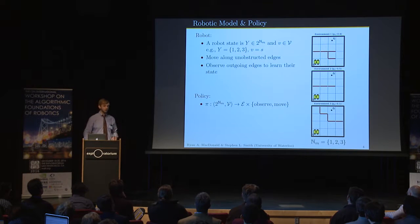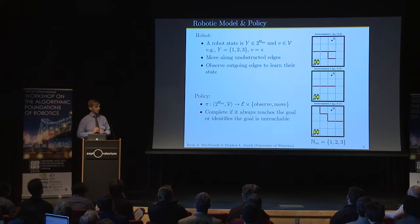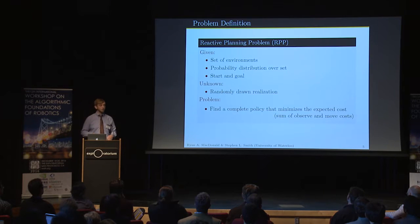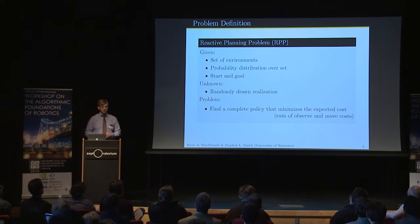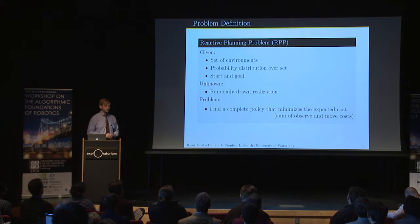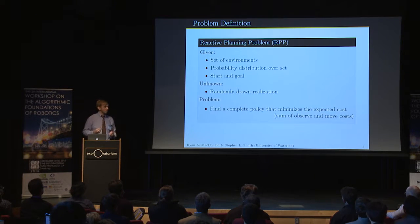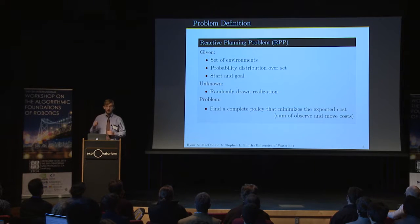We're not interested in policies in general — we're interested in complete policies. These policies will always reach the goal when it's possible, and identify when it's impossible to reach the goal. So the reactive planning problem is: given a set of environments, a probability distribution over those environments, and a start and goal, can you find a complete policy that minimizes the expected cost? We take the cost to be the sum of observation and movement costs.